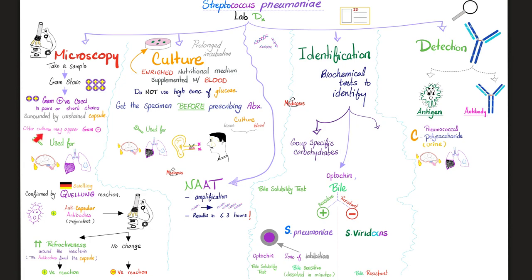Recall that older cultures may appear pink. That's why the culture should be fresh. When should you use this gram stain? In cases of meningitis and pneumonia.